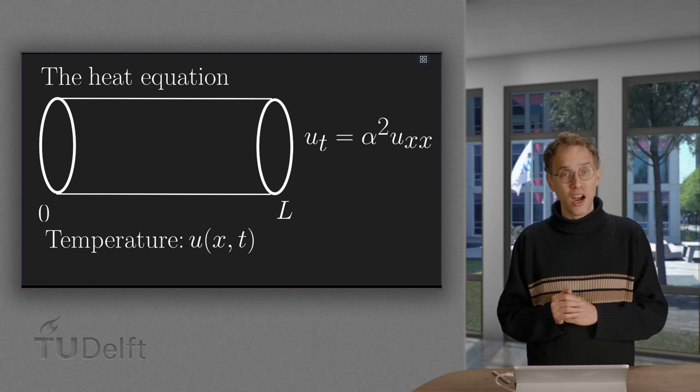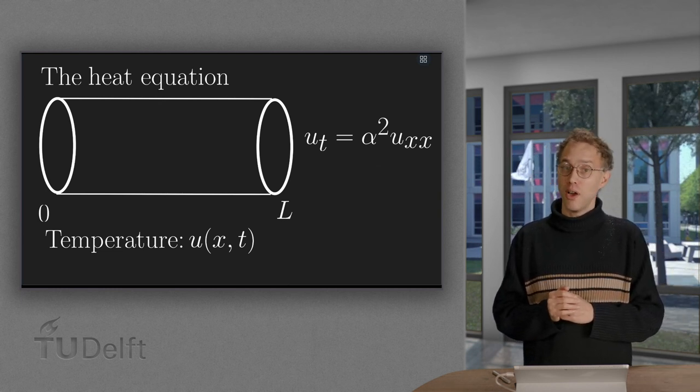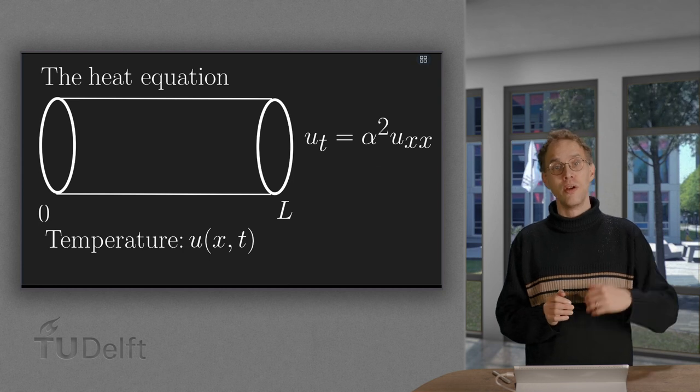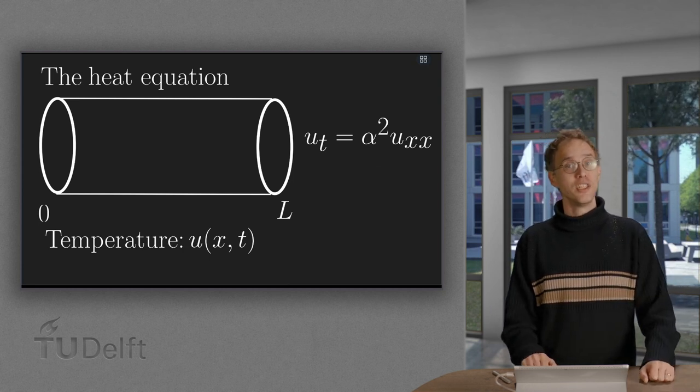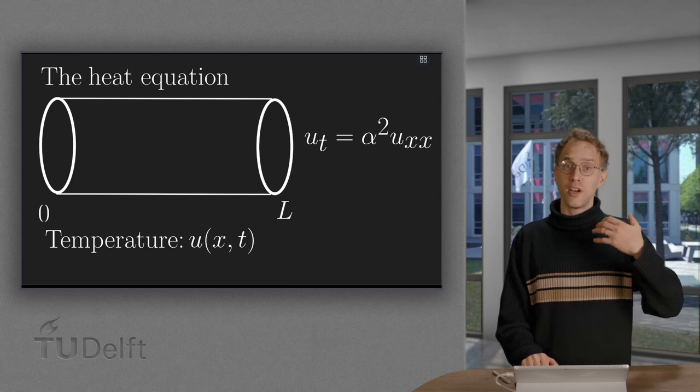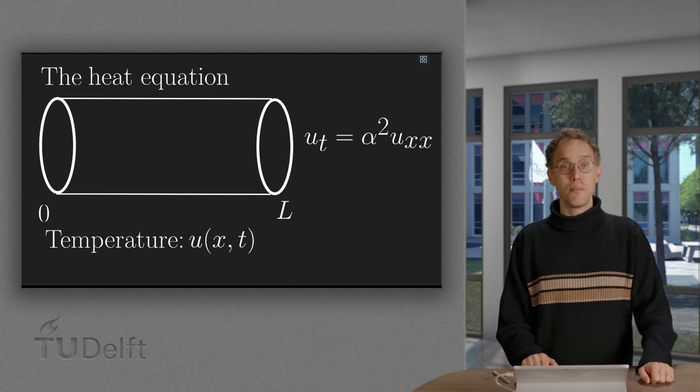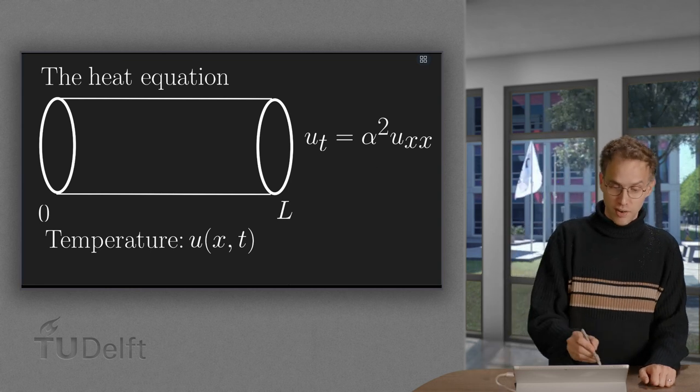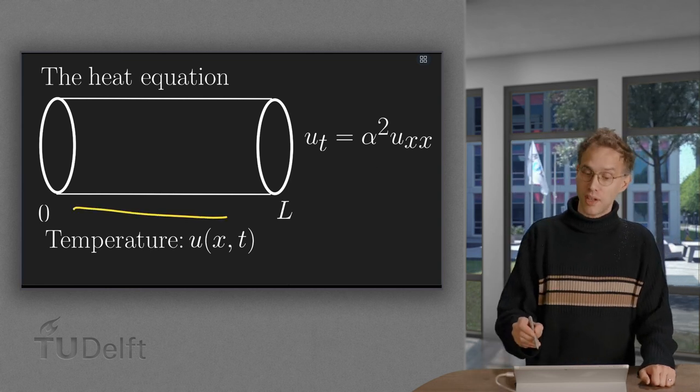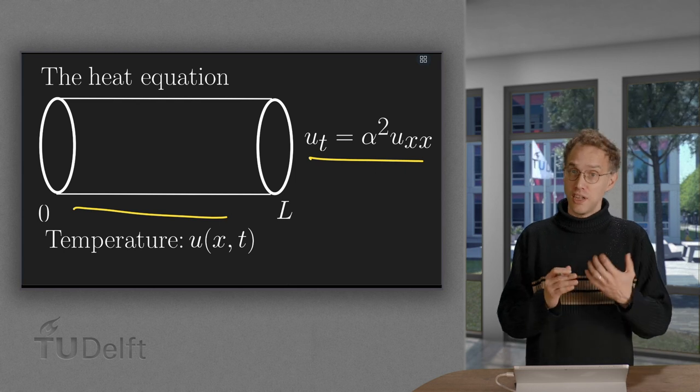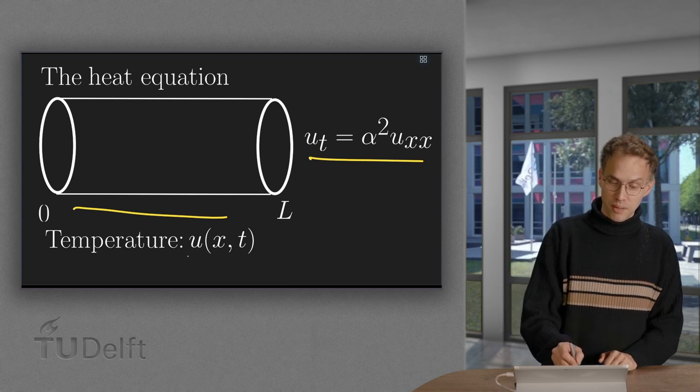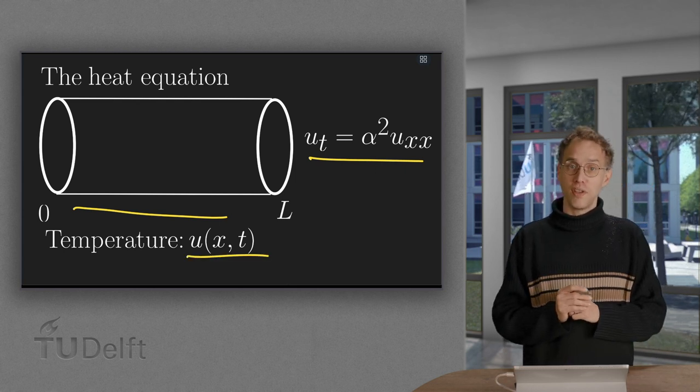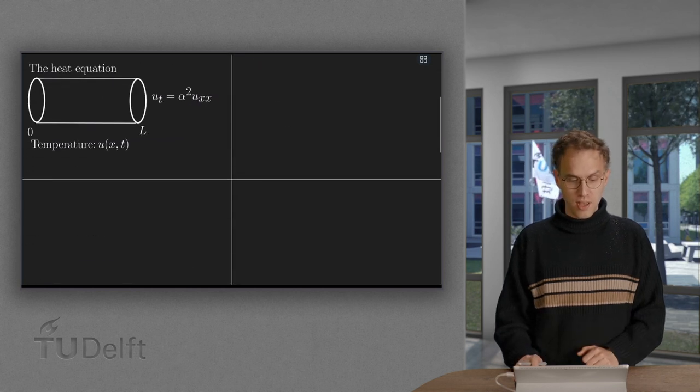What these conditions are is usually dictated by the underlying physics of your problem. For the heat equation we will discuss a few possibilities, which are the conditions you will encounter in practice most often. Here we have our rod again, with our heat equation as we derived earlier, where the temperature is given as a function of x and t.